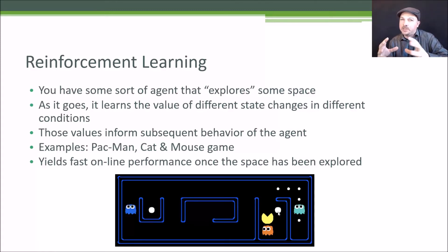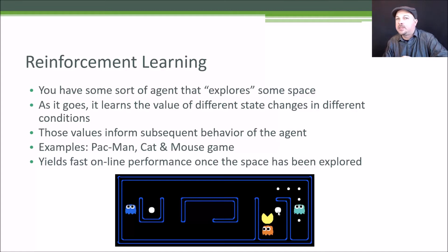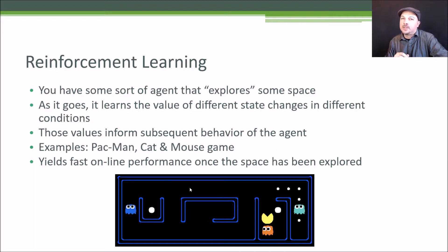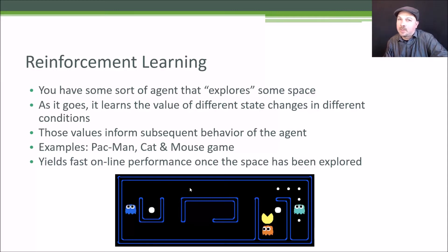As it explores the whole space, it refines these reward values for a given state, and can then use those stored reward values to choose the best decision given a current set of conditions. There's also a game called Cat and Mouse that's commonly used as an example. The benefit of this technique is that once you've explored the entire set of possible states your agent can be in, you can very quickly achieve good performance in future iterations.